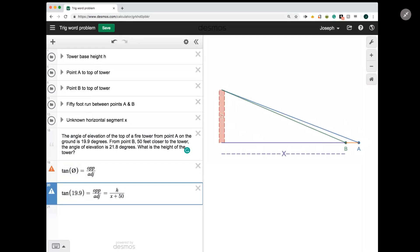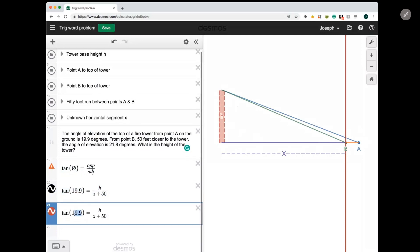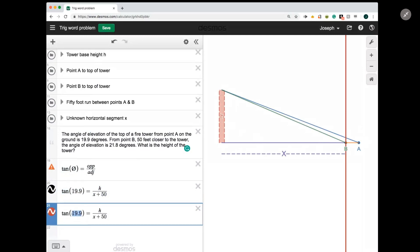All right, so now the other triangle. For the other triangle, instead of 19.9 degrees, we're using 21.8 degrees. And instead of the, now the height is the same, the opposite side is still the height of the tower, but the adjacent side is a little shorter. It's just x.